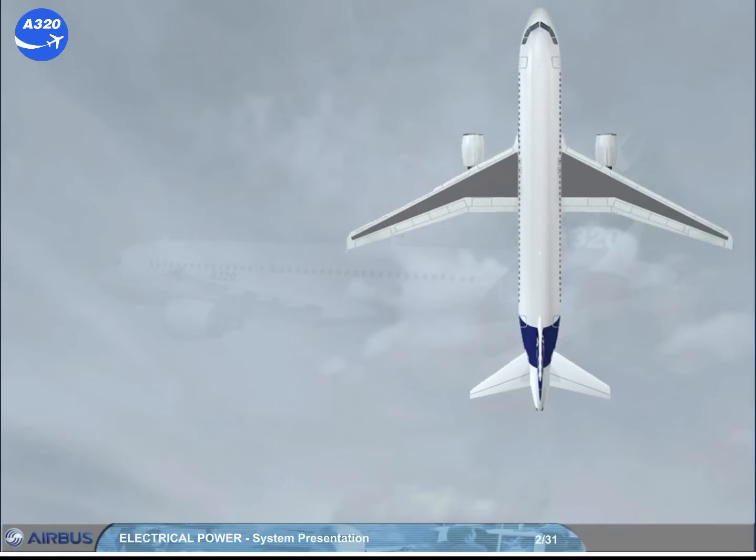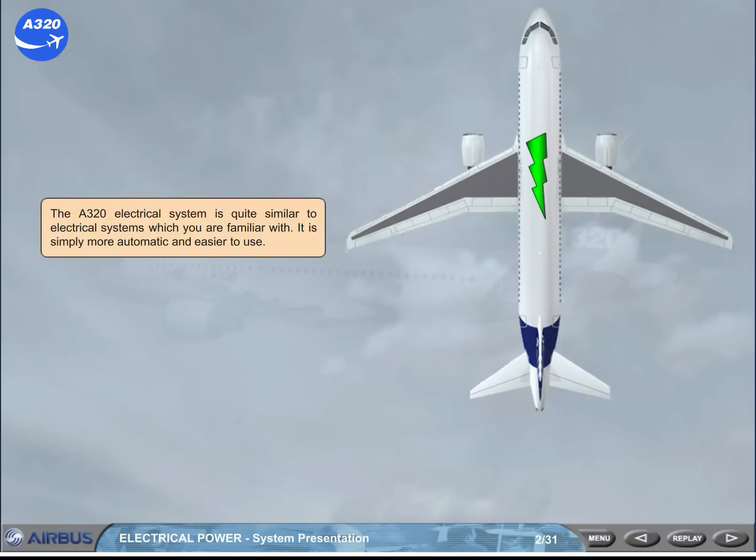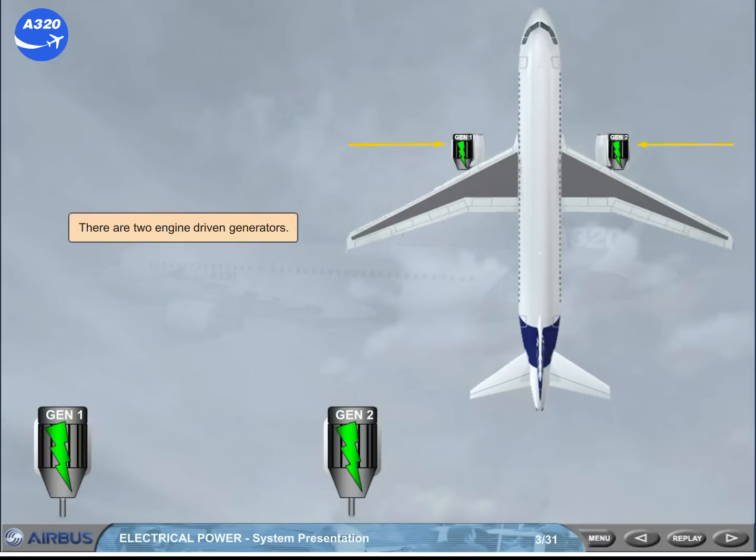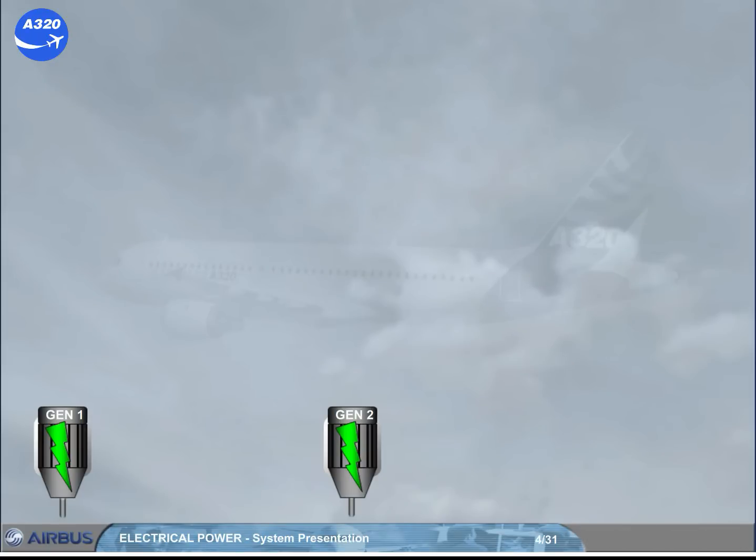The A320 electrical system is quite similar to electrical systems which you are familiar with. It is simply more automatic and easier to use. There are two engine driven generators. The generators maintain a constant speed by a drive mechanism known as an integrated drive generator, IDG.